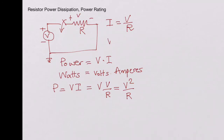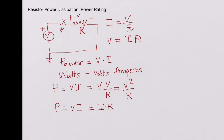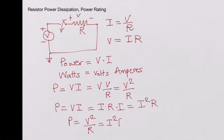We know V is I times R, so power is I times R multiplied by I, which is I squared R. So the power dissipated in the resistor is V squared over R, which is also equal to I squared R.